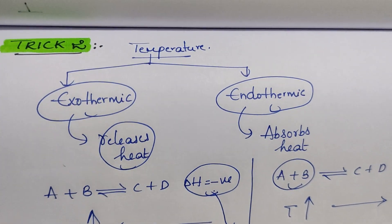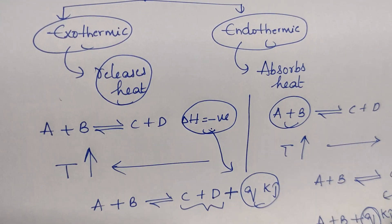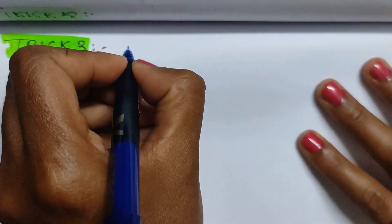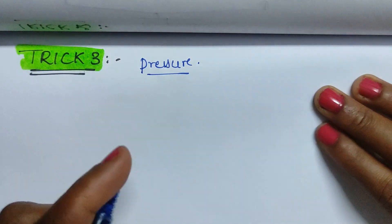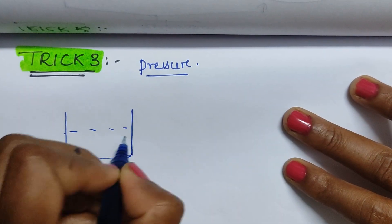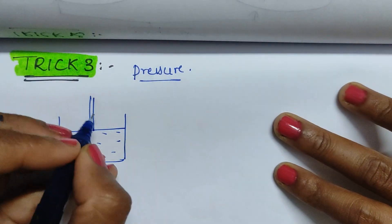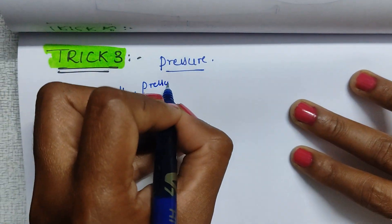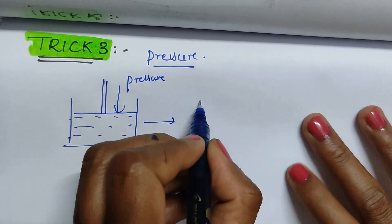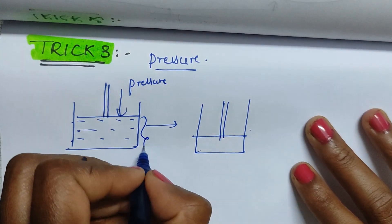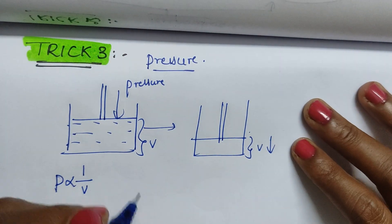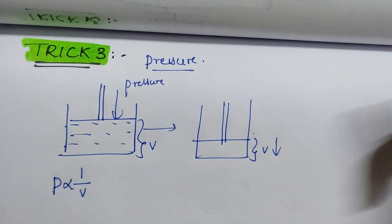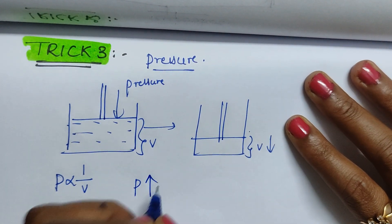That is Trick Number Two on temperature. Now under Trick Number Three, I am going to explain the effect of pressure. Consider a container with some gas and a piston. When we apply pressure over the piston, the piston moves down — volume decreases. As per Boyle's Law, pressure is inversely proportional to volume: more pressure means less volume.